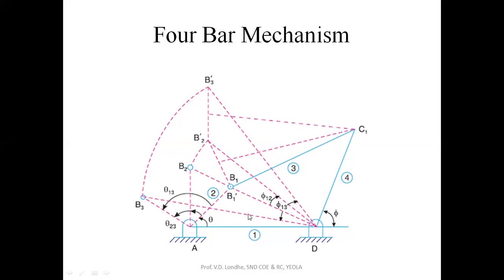For this problem, we will know the length of the fixed link, the length of the crank, the initial position of the crank, and the second and third positions of the crank. For the second and third positions of the crank, we will also know what the position of the output link will be — that is, the second position and third position of the output link.